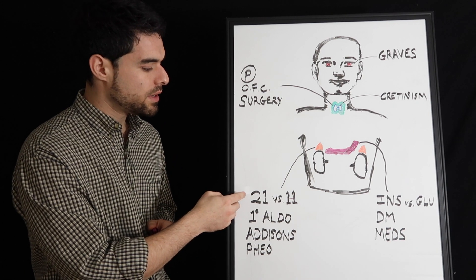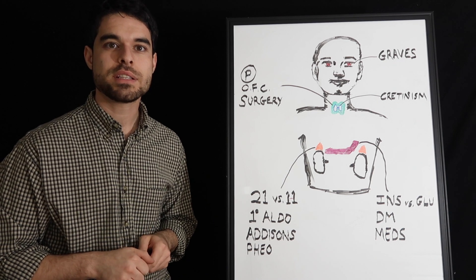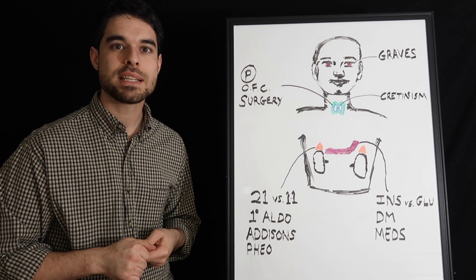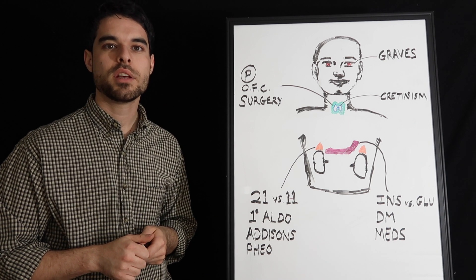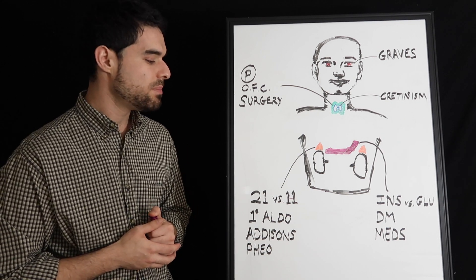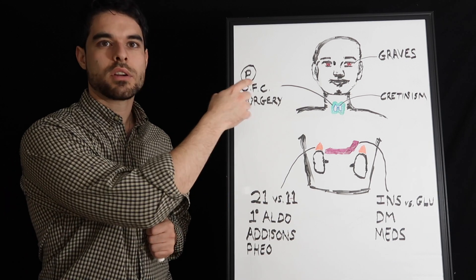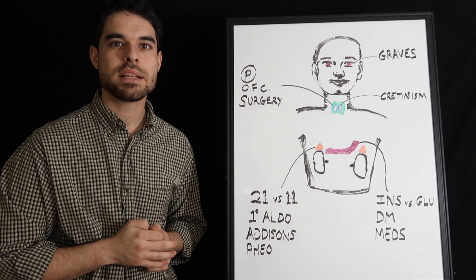The diagnosis for a 21 hydroxylase deficiency is you're going to have increased 17 hydroxyprogesterone. So 17-OHP will be increased in a 21 deficiency. And the treatment for a 21 deficiency is to give steroids to cause a feedback so it suppresses the ACTH.